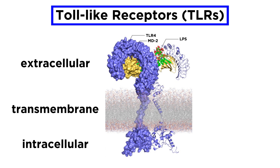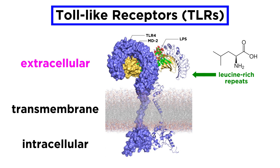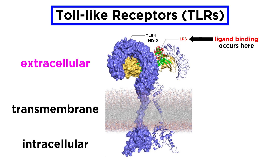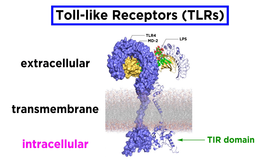Let's take a look at the structure of a TLR. TLRs are single-pass transmembrane proteins, meaning that part of the protein passes through a lipid membrane one time. The extracellular domain of a TLR has leucine-rich repeats that form a horseshoe, or C shape, and this is the part of the protein that binds to ligands. The intracellular side has a distinct region called a TIR domain.